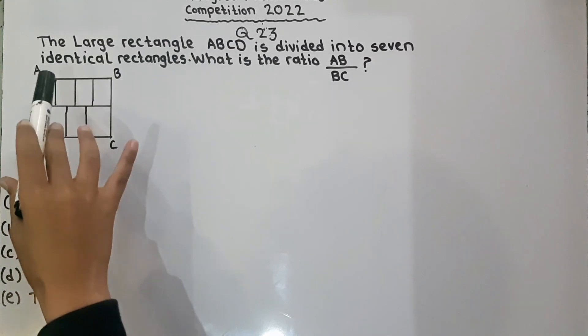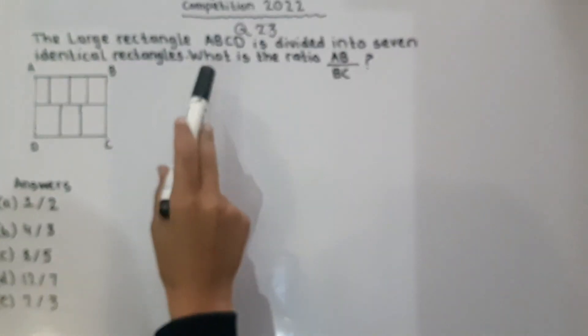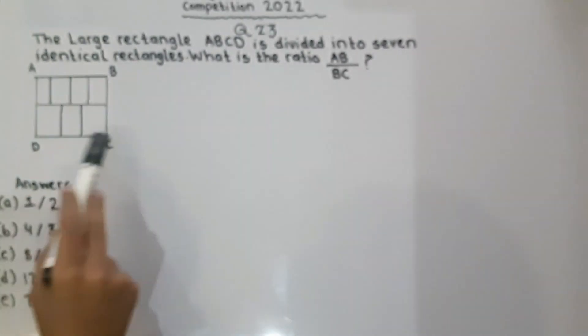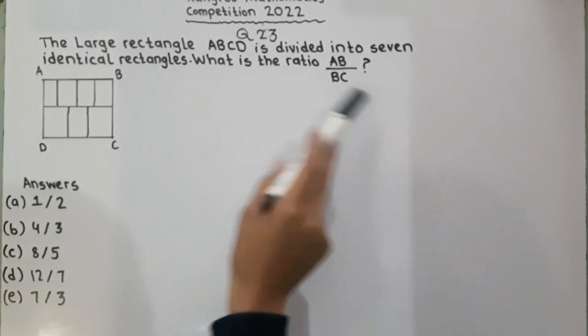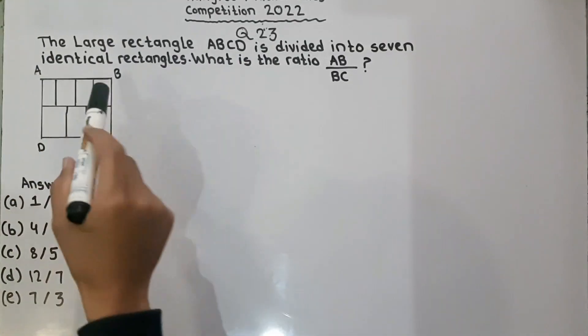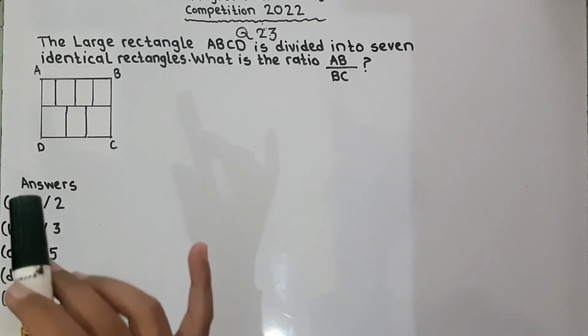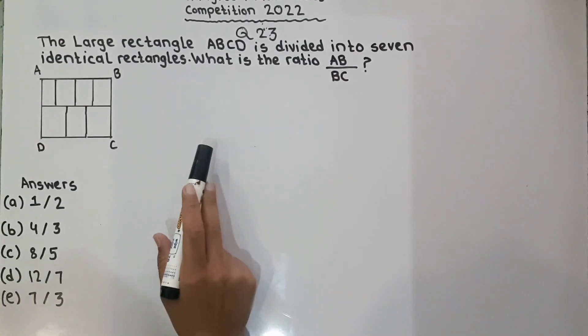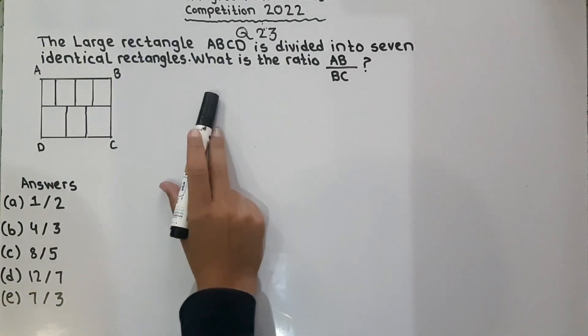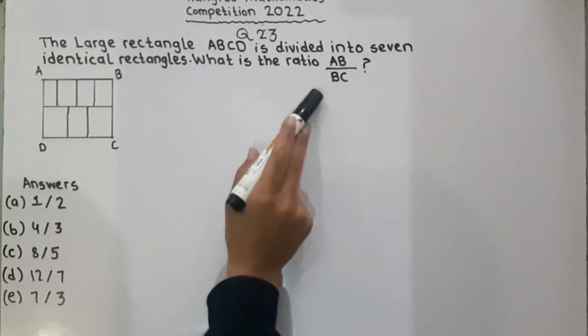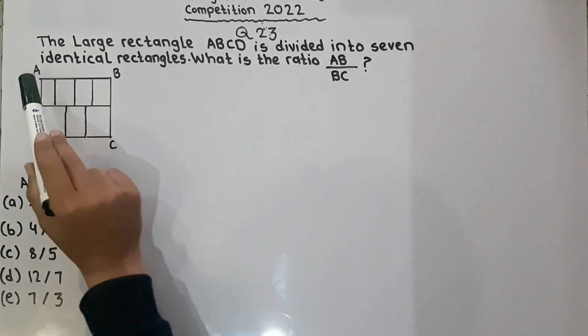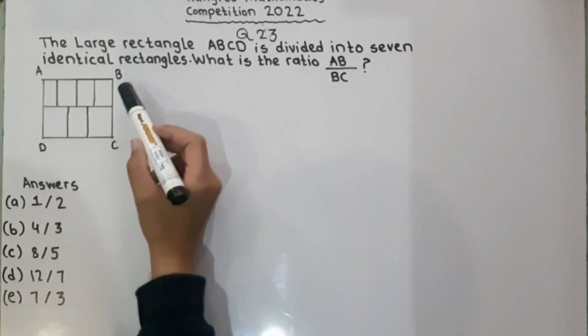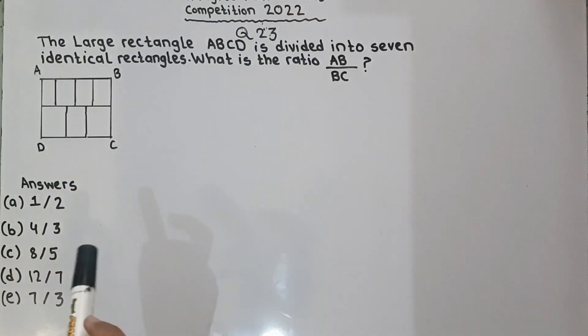The question is the large rectangle ABCD. They are talking about this rectangle. It's divided into 7 identical rectangles. What is the ratio AB divided by BC? They are talking about that. What is the ratio AB divided by BC? And they have given us 5 options of answers and we have to choose the correct one by solving it.